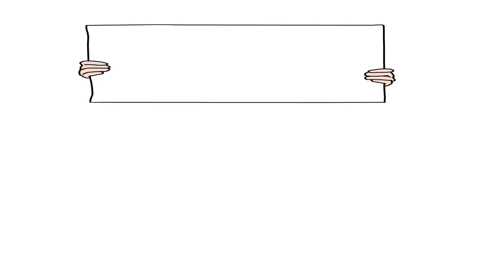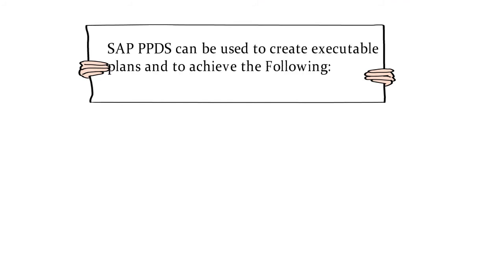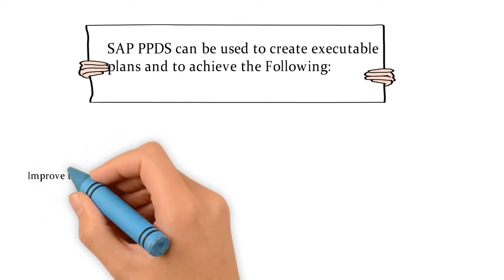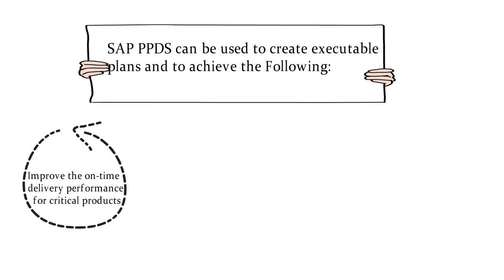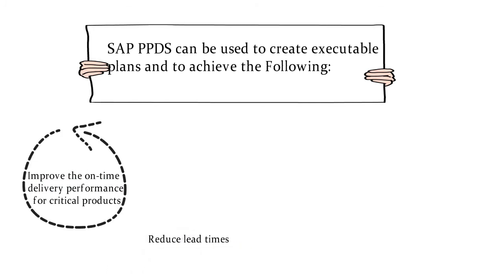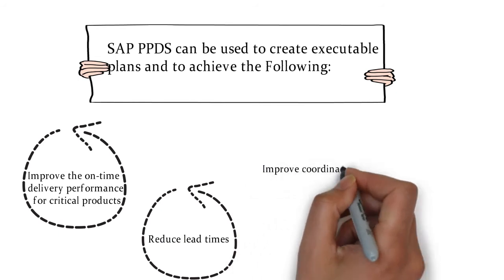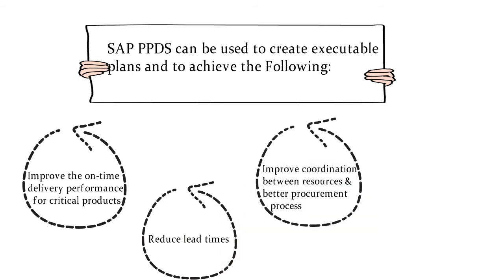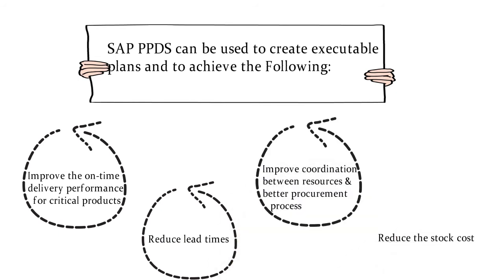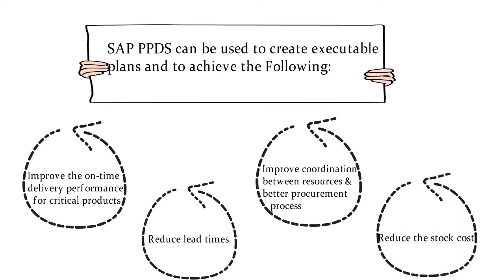PP/DS can be used to create executable plans and to achieve the following: improve on-time delivery performance for critical products, reduce lead times, improve coordination between resources, better procurement processes, and reduce stock costs.